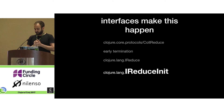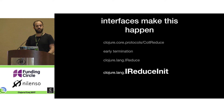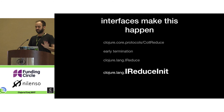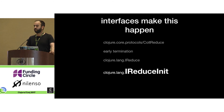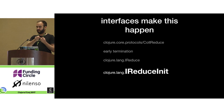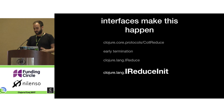It's all through an interface — there are a bunch of different interfaces, but we're going to focus on IReduceInit. Please don't call the reduce arity without the init value because you're going to run into trouble. This is the reduce arity with the init value: three arguments — the collection, the init value, and the transformation, the reduction function.